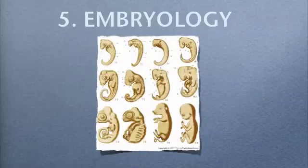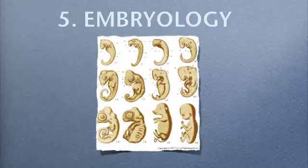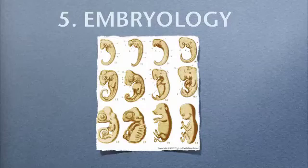Embryology: if you look at embryos of fish, turtle, pig, and human, they all look the same. During one of our stages we even have gills, which is crazy because they don't do anything. This proves we had a common ancestor — the DNA has a code for gills and a tail. We actually have a tail as embryos, but then the DNA instructions tell us to get rid of it. Fish and pigs keep their tails.